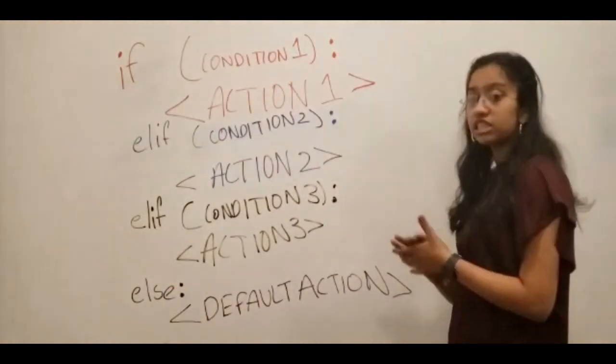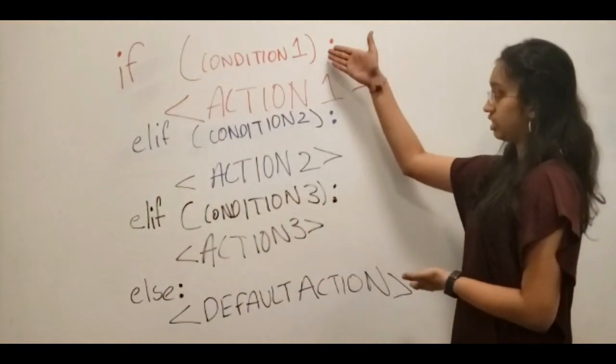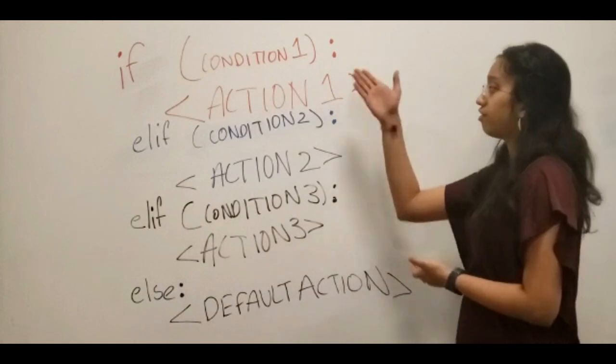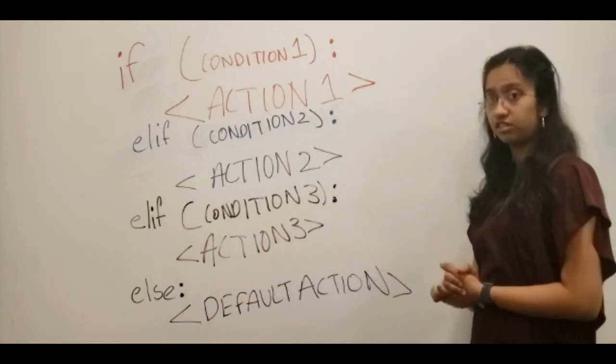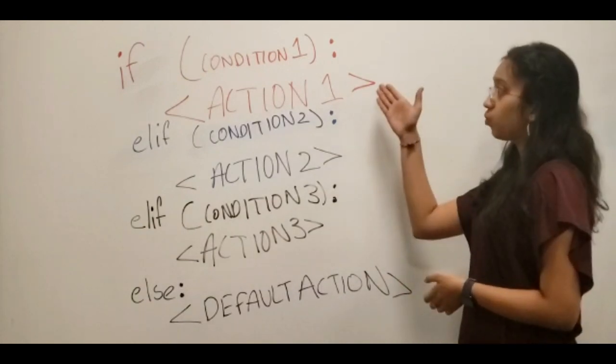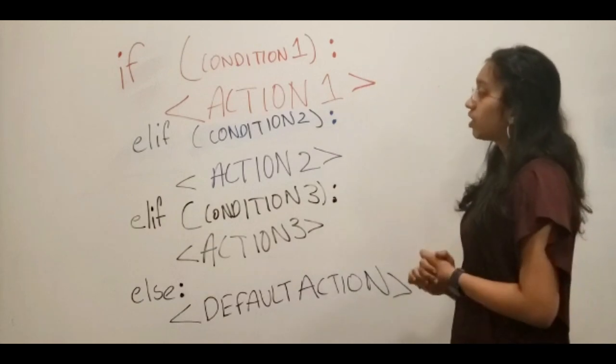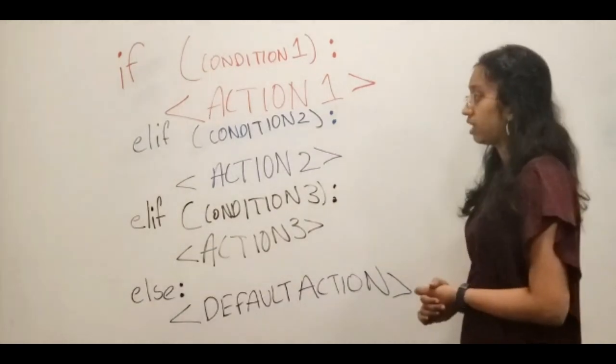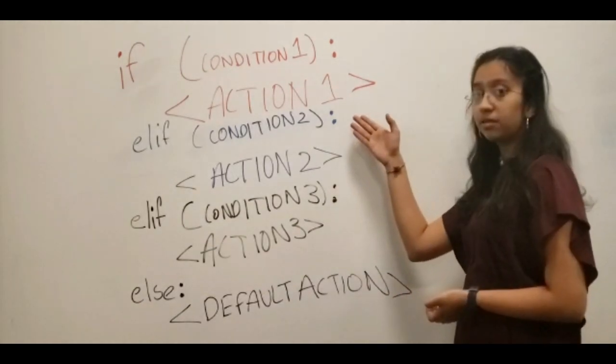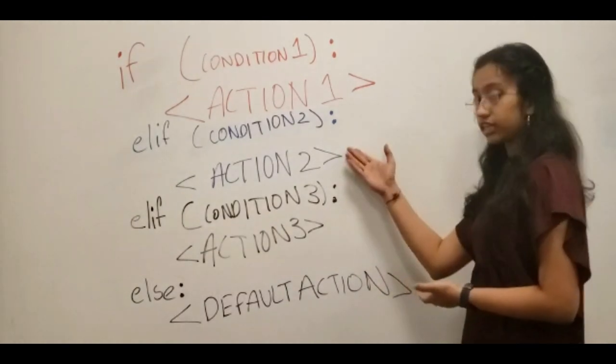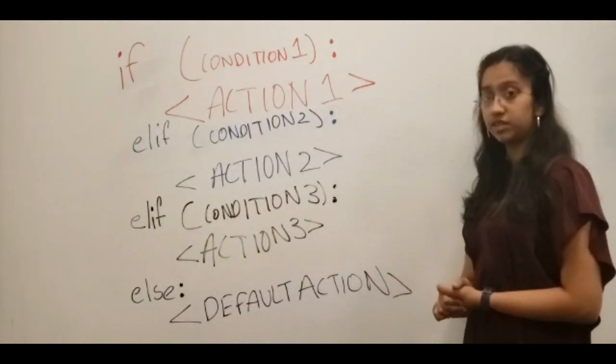The program checks if conditions are met. If the first condition is met, the program will execute the code for action 1 and then move on with the rest of the code. If condition 1 is not met, the program will check if condition 2 is met. If condition 2 is met, the program will execute the code for action 2 and then move on with the rest of the code.